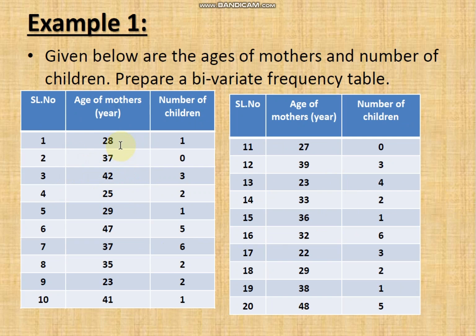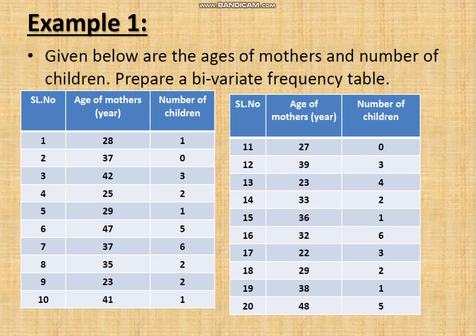Looking at the ages of mothers, the minimum value is 22 and the highest value is 48, giving a range of 26 — which is large. So age of mother (x) will be treated as a continuous variable. For number of children (y), the lowest value is 0 and the highest is 6 — a small range — so it is taken as a discrete variable.